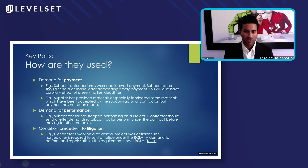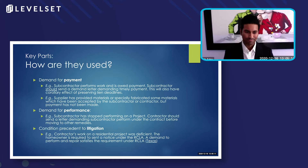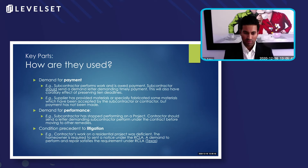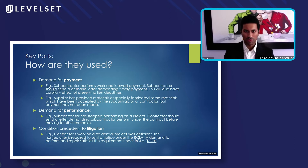Likewise, for performance, if a subcontractor stopped performing on a project, contractors should send a letter demanding that the subcontractor perform under that contract before moving to other remedies. Essentially, you don't want to jump from zero to 60. You want to give whoever the recipient is an opportunity to do the right thing. A demand letter can be a condition precedent to litigation — it's a box you have to check if you want to continue with litigation. For example, under Texas law, we have what's called the Residential Construction and Litigation Act. Under that act, if a contractor's work on a residential project is deficient, the homeowner is required to send a notice. Failure to send a demand and identify the repairs that need to be conducted will create a problem for you. So sending the demand letter checks that box and allows you to proceed with litigation if necessary.